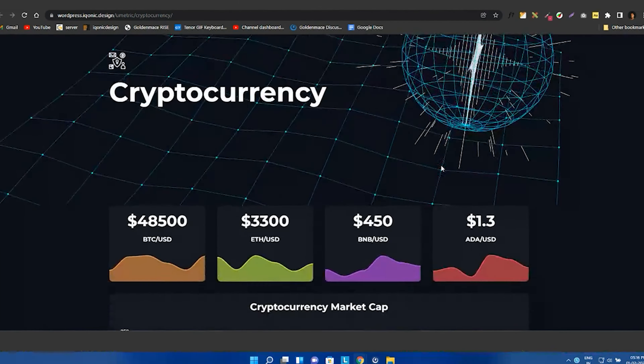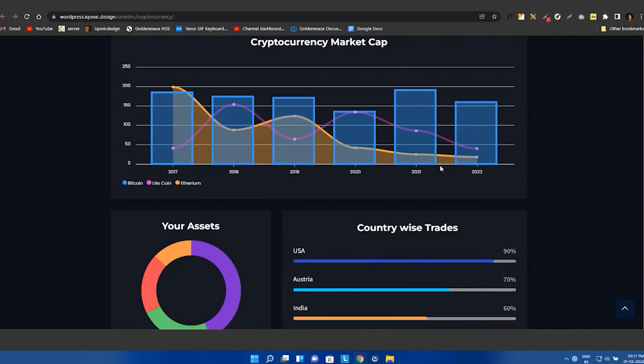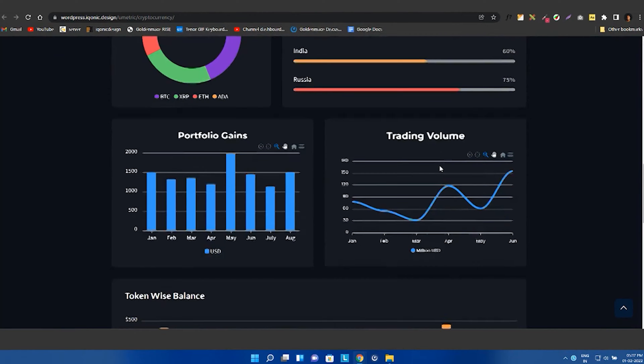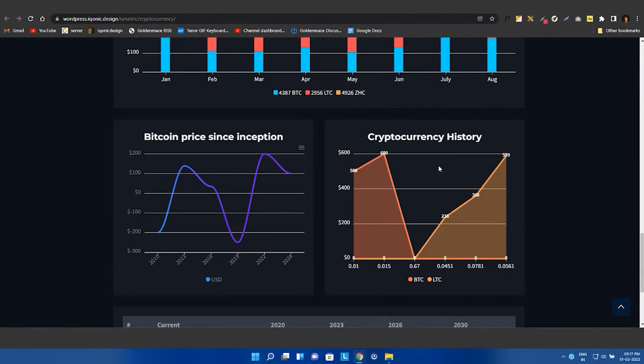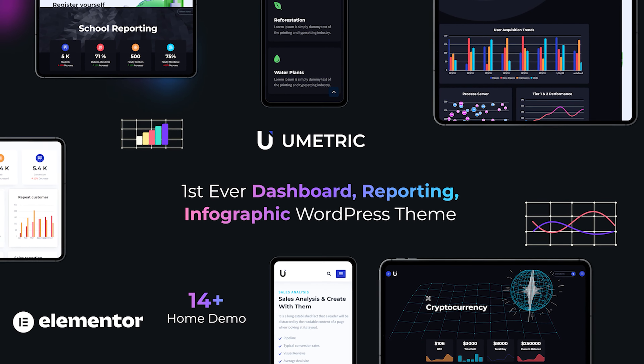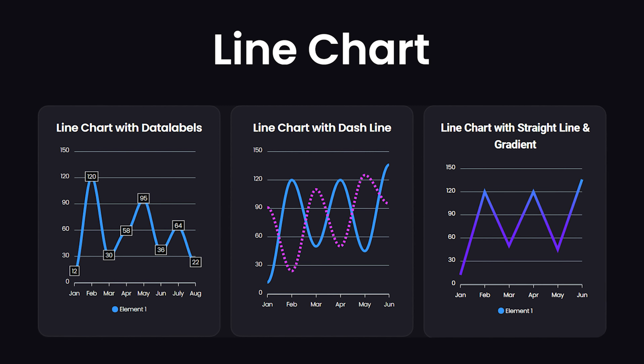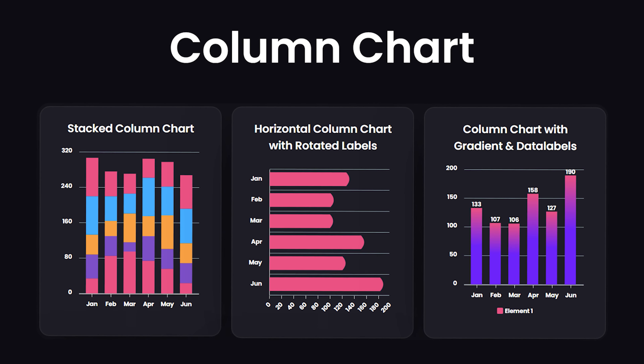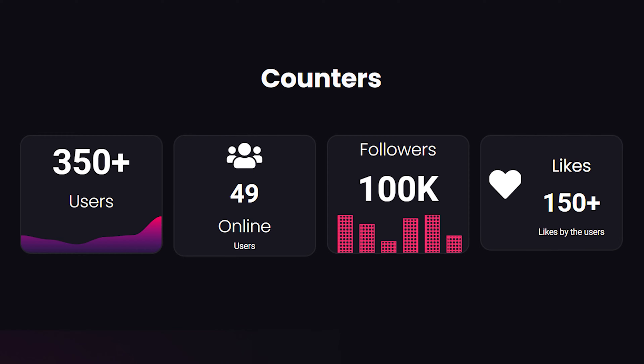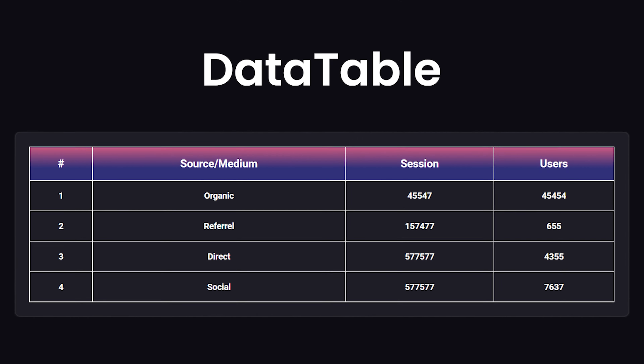If you like this dashboard and you want the same kind of infographic pages and dashboard, you can get our amazing and one and only theme U-Metric, which is based on WordPress dashboard reporting and infographic theme. Now coming back to Graphina, we are going to make use of various charts like mix, line, column, column stack and much more. We are also going to see counters and data tables in Graphina.